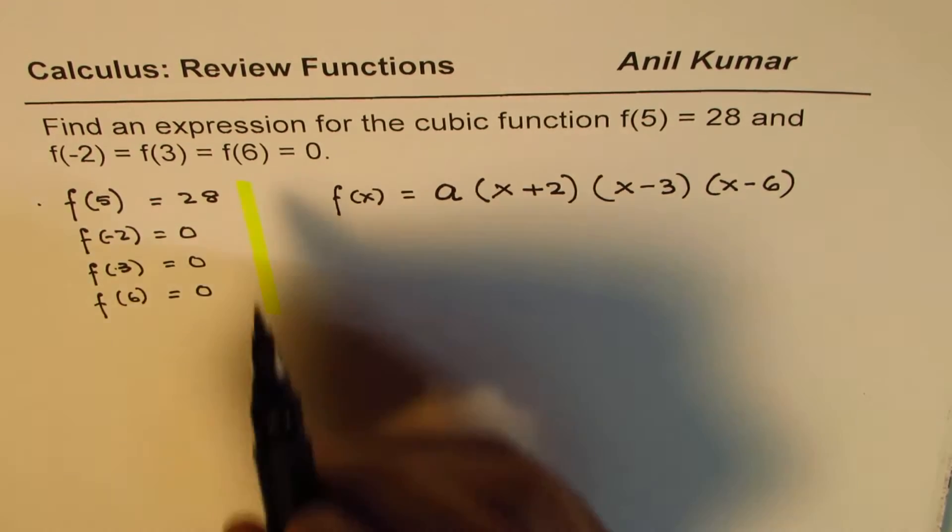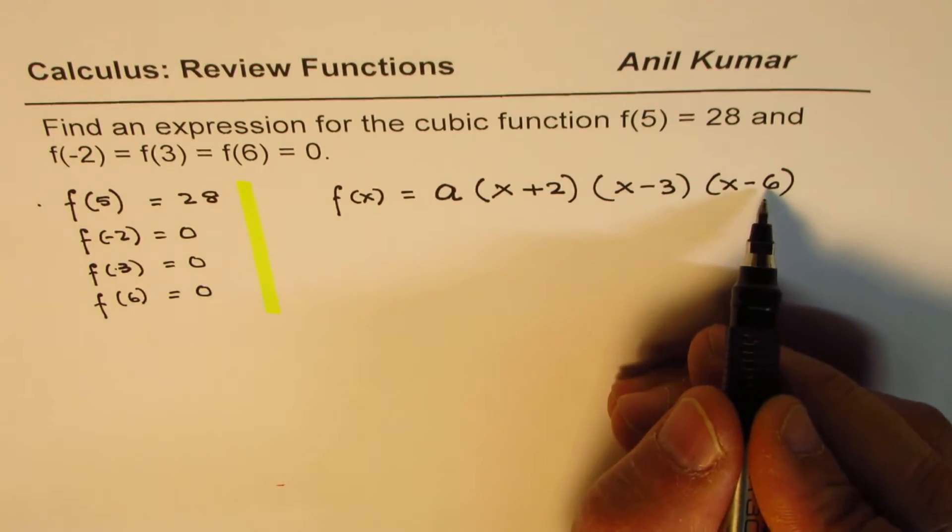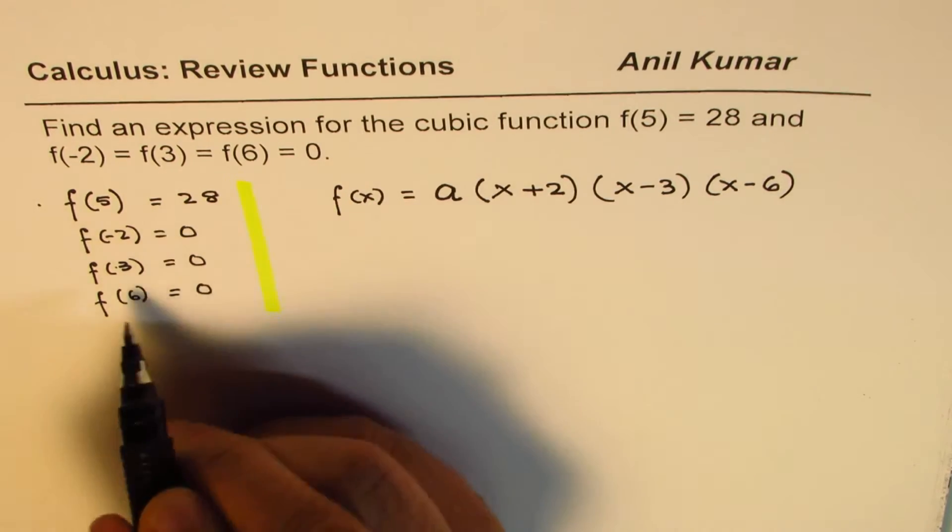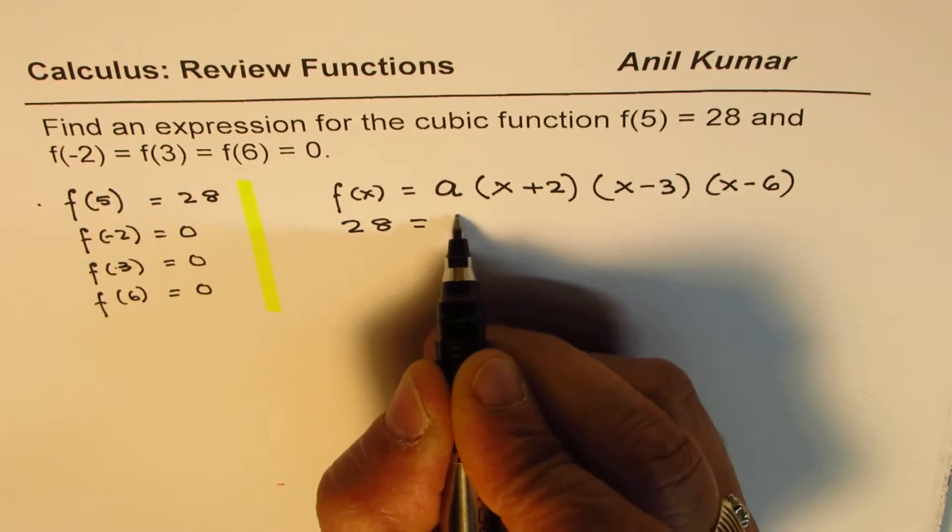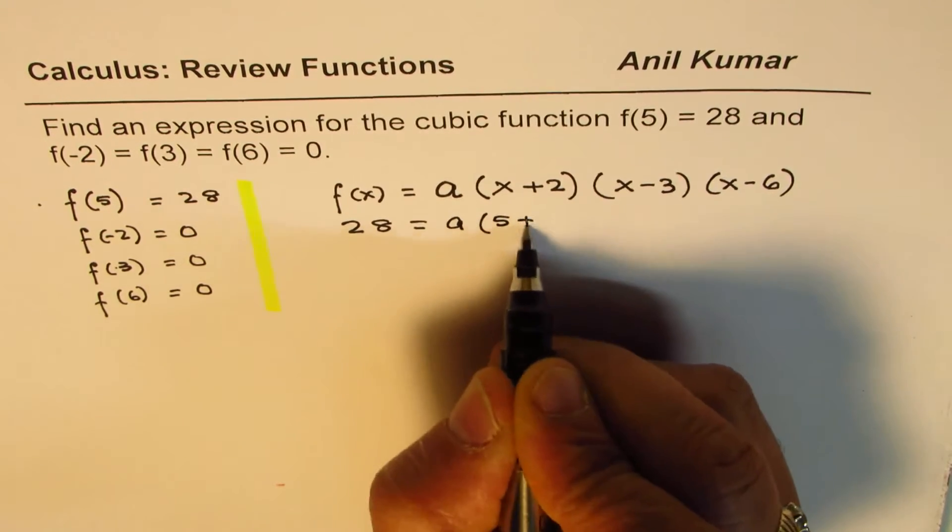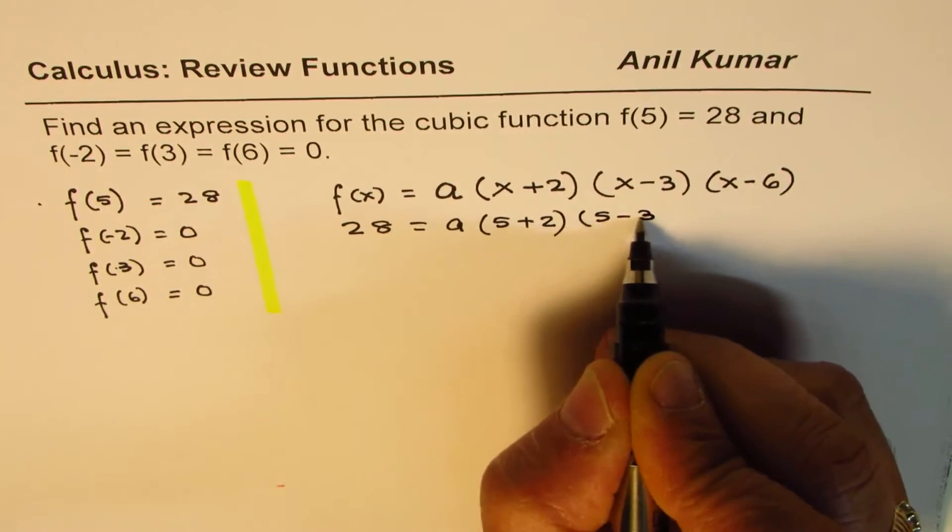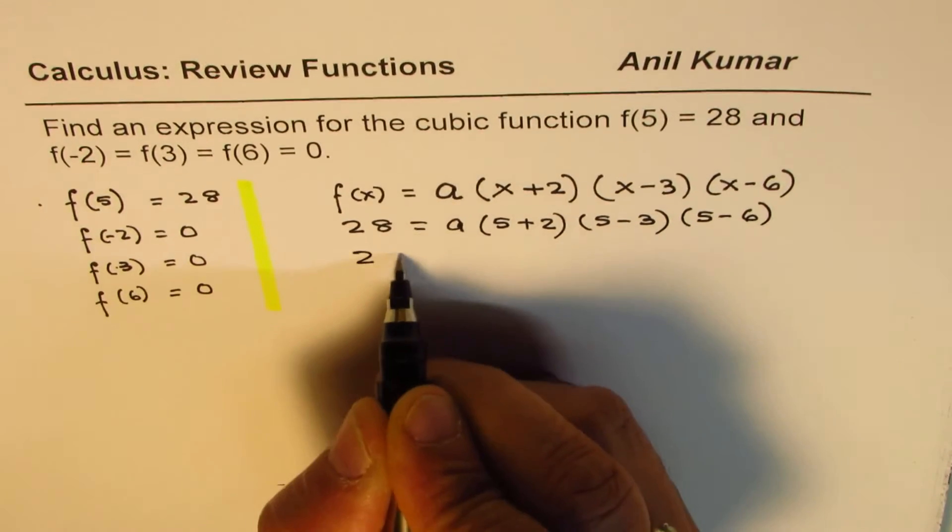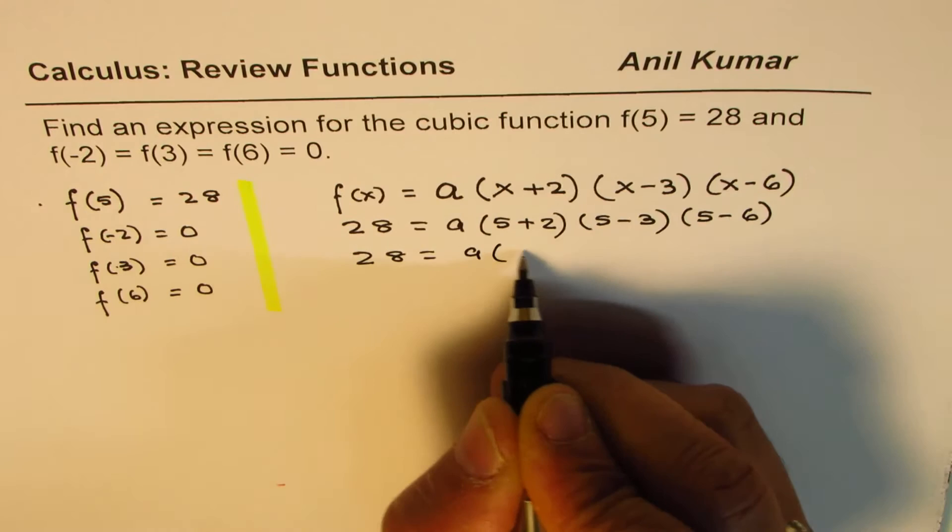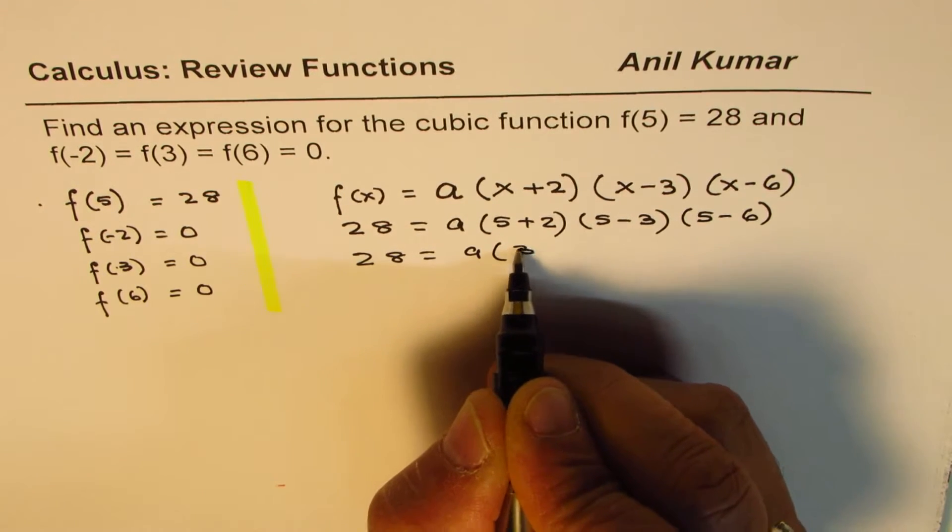So as I said, if I substitute 5 in this equation, I know f(x) is 28. So I'll write 28 here and substitute 5 for x. So we get 5 plus 2 times 5 minus 3 times 5 minus 6, and that gives me 28 equals a times 3, I mean sorry, 7.